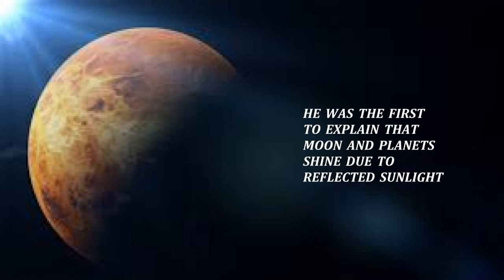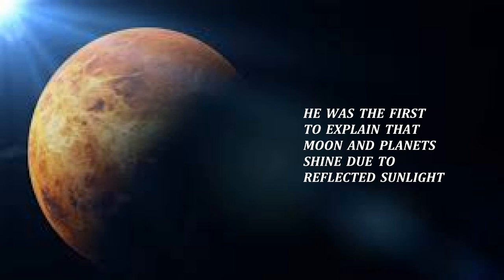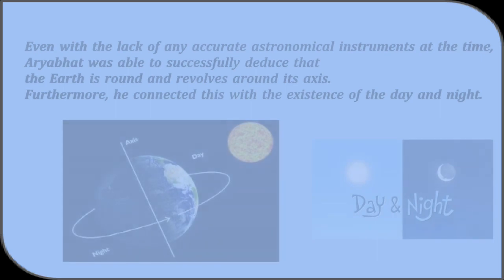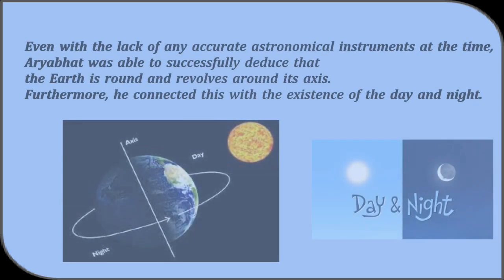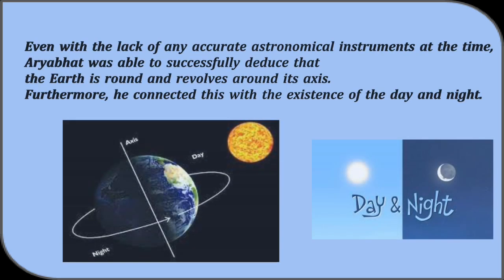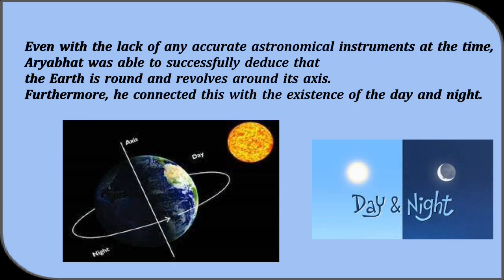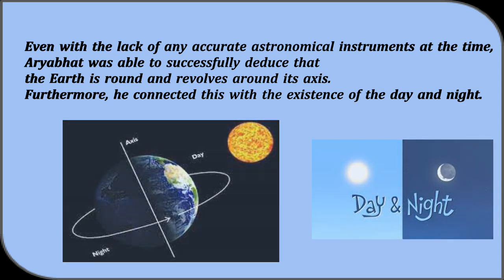He was the first to explain that moon and planet shine due to the reflected sunlight. Even with the lack of any accurate astronomical instruments at that time, Aryabhata was able to successfully deduce that the earth is round and revolves around its axis. Furthermore, he connected this with the existence of the day and night.